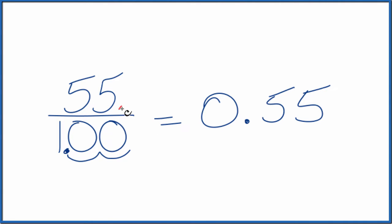We still have to do that to the numerator as well. So two places, and we end up with 0.55 over one, which is just 0.55.